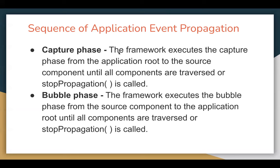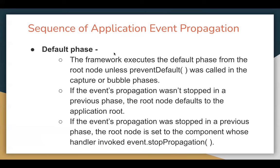In application event propagation, the capture phase executes from the application root to the source component until all components are traversed or stop propagation is called. In the bubble phase, the framework executes from the source component to the application root until all components are traversed or stop propagation is called. There is also a default phase: the framework executes the default phase from the root node unless prevent default was called in the capture or bubble phase. If propagation wasn't stopped in a previous phase, the root node defaults to the application root. If propagation was stopped, the root node is set to the component whose handler invoked event stop propagation.